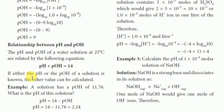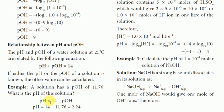If either the pH or the pOH of a solution is known, the other value can be calculated. For example, a solution has a pOH of 11.76. What is the pH of the solution? pH equals 14 minus pOH, so pH equals 14 minus 11.76, which equals 2.24.